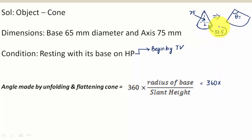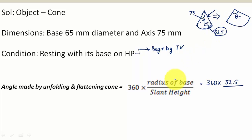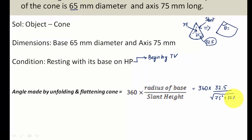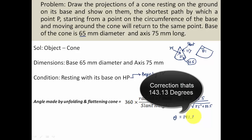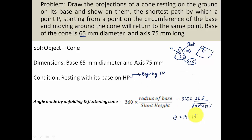The base radius is 32.5 mm and the slant height forms a right-angle triangle with the height (75 mm) and radius (32.5 mm). Using Pythagoras: slant height = √(75² + 32.5²). Therefore theta works out as 141.13 degrees, to two decimal places.